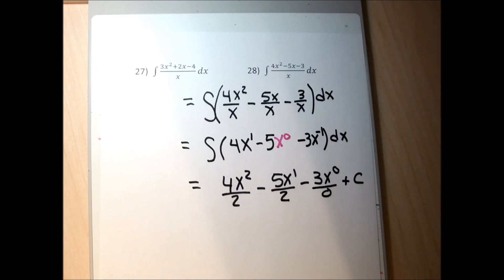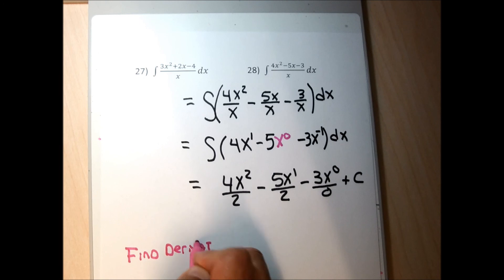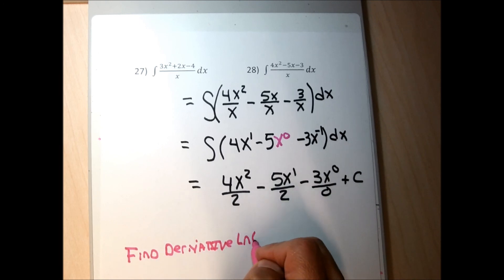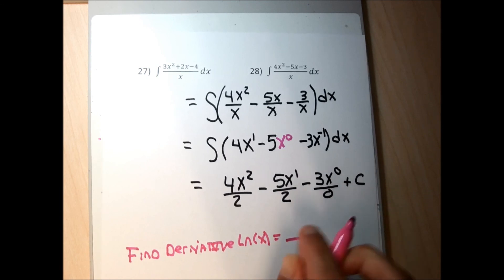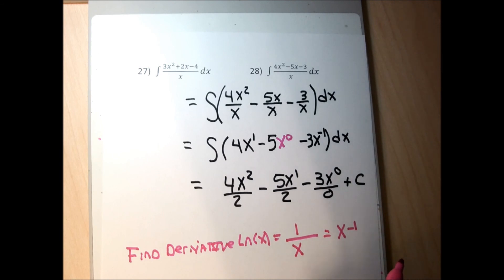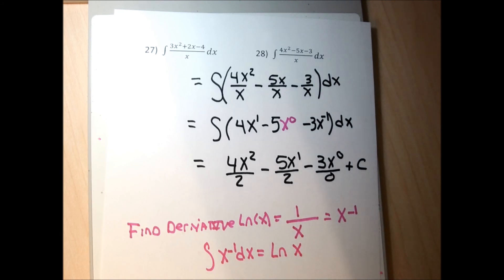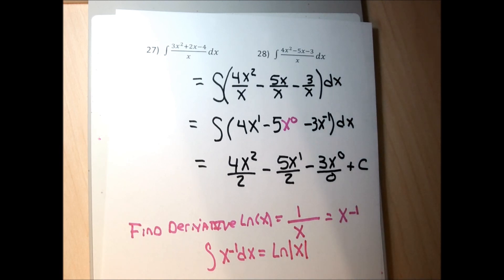The new rule involves the natural log. The derivative of ln(x) is 1/x, which is x to the negative 1. So the integral of x to the negative 1 is the natural log of x. More specifically, the integral of a times x to the negative 1 dx equals a times the natural log of the absolute value of x plus C.